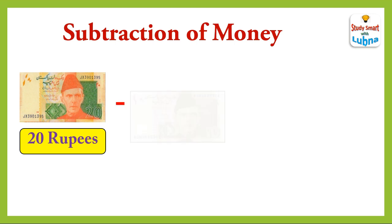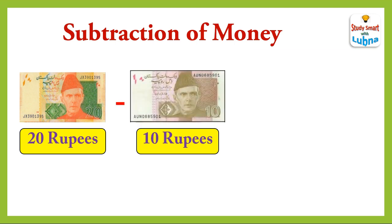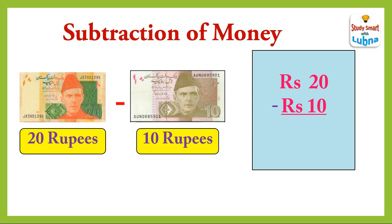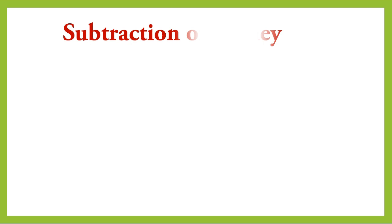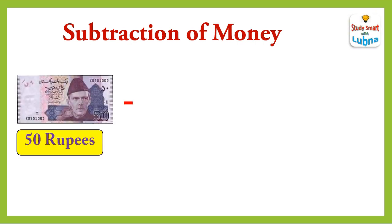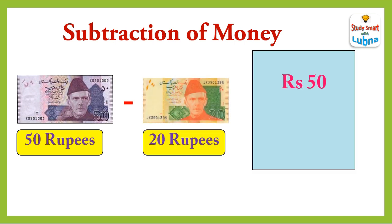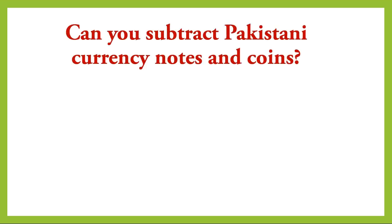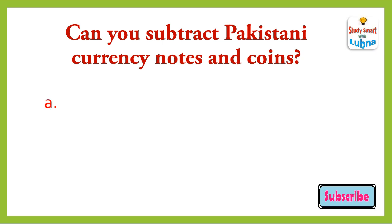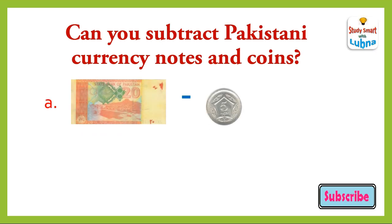Twenty rupees note minus ten rupees note — when we subtract rupees ten from rupees twenty, we will get rupees ten. Fifty rupees note minus twenty rupees note — when we subtract twenty rupees note from fifty rupees note, we will get rupees thirty.